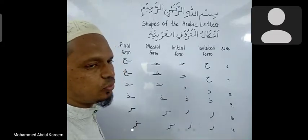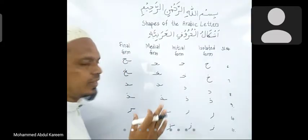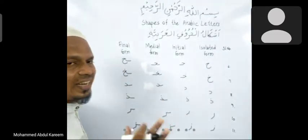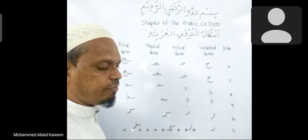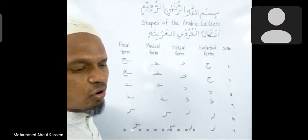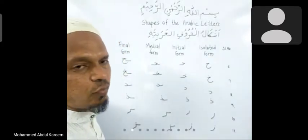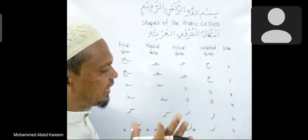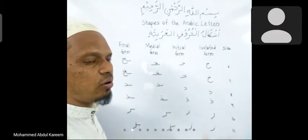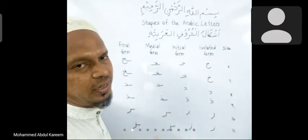As you know, six letters are non-connected letters: alif, dal, dhal, ra, za, and waw. These six letters do not join the following letters. That is the reason whenever these letters are written, they are written in complete form.